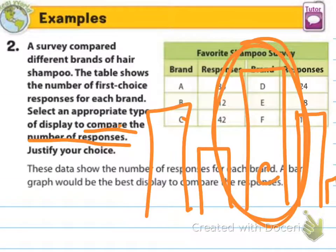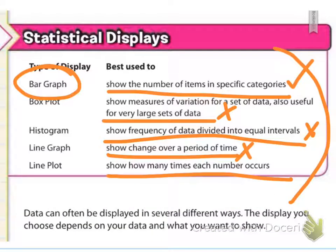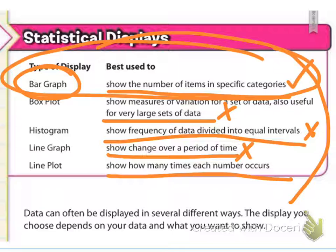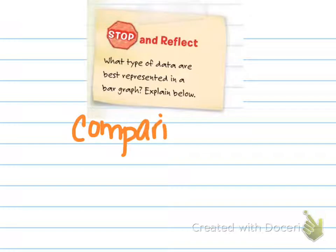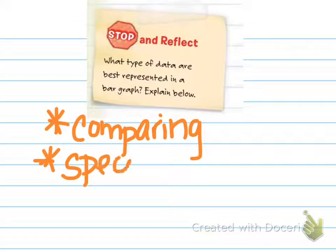So what type of data are best represented in a bar graph? Really we could go back to our original display guidelines — we're going to use one that has specific categories. It's also a good explanation to say if we want to compare information. Comparing is a big deal in bar graphs, and also if we want to have specific categories.